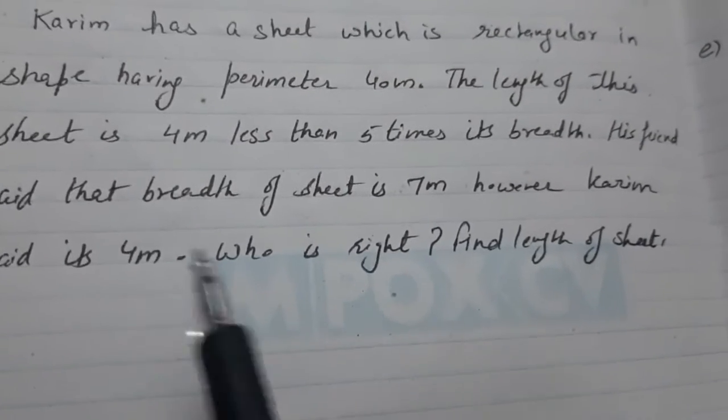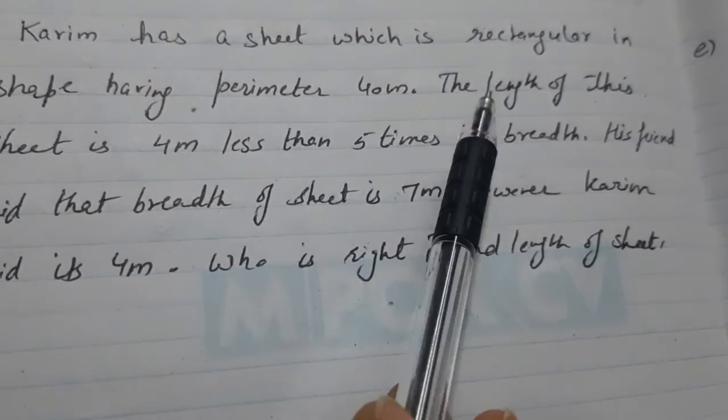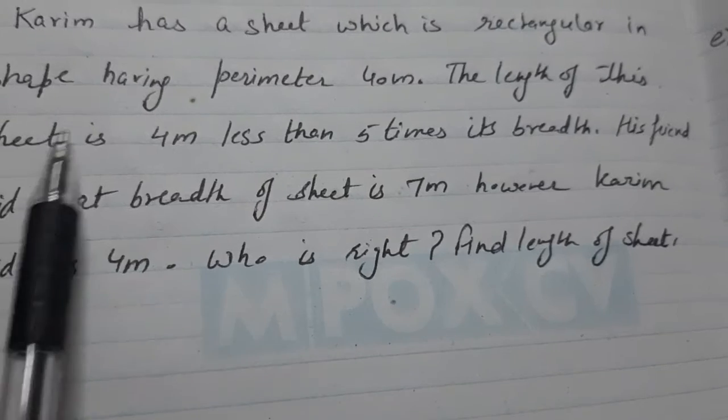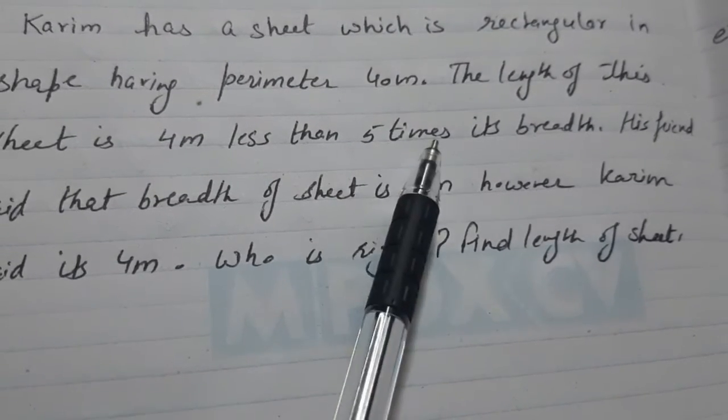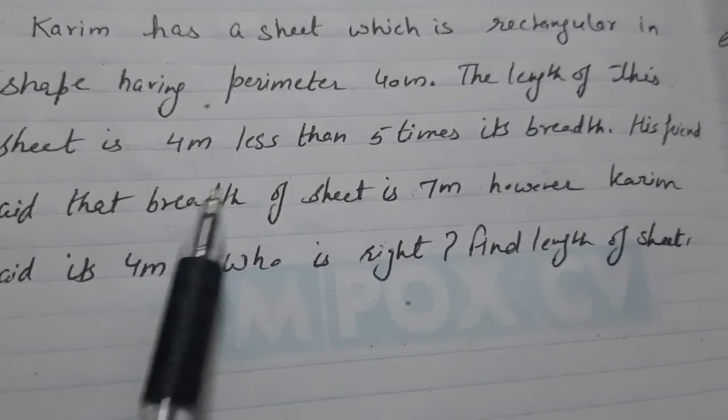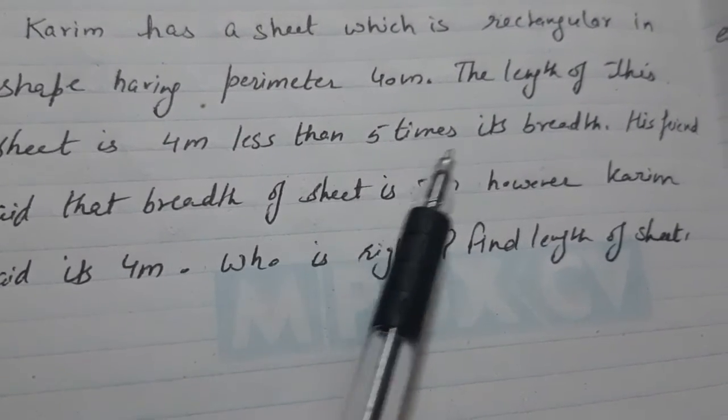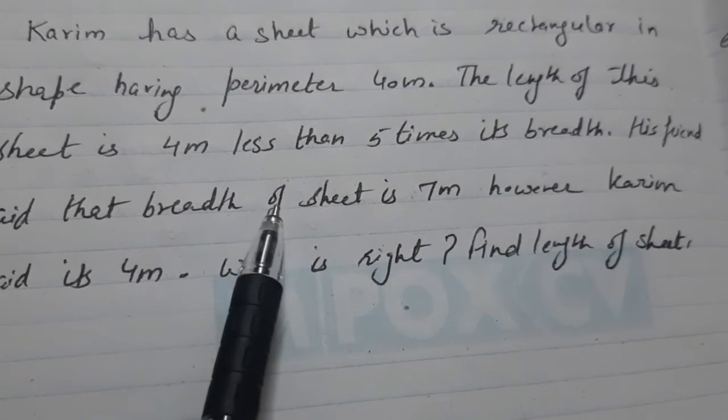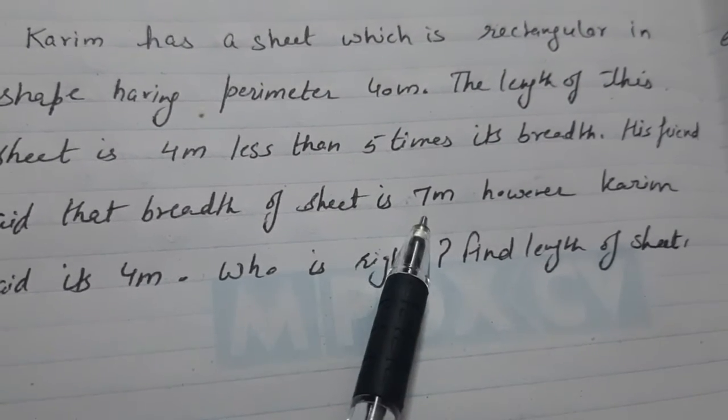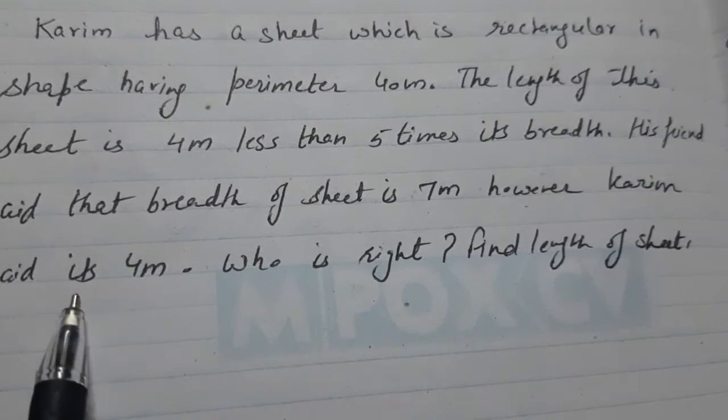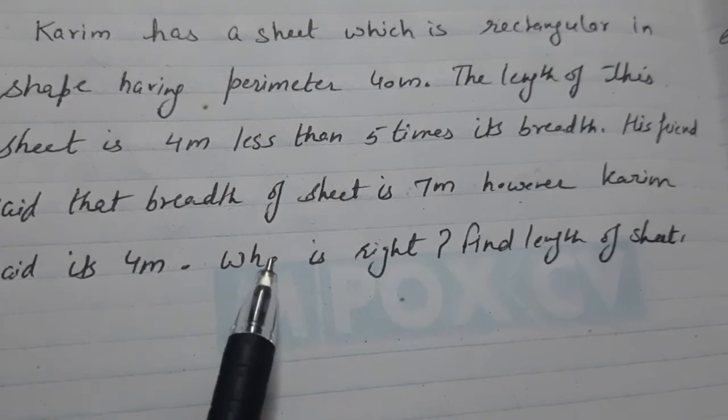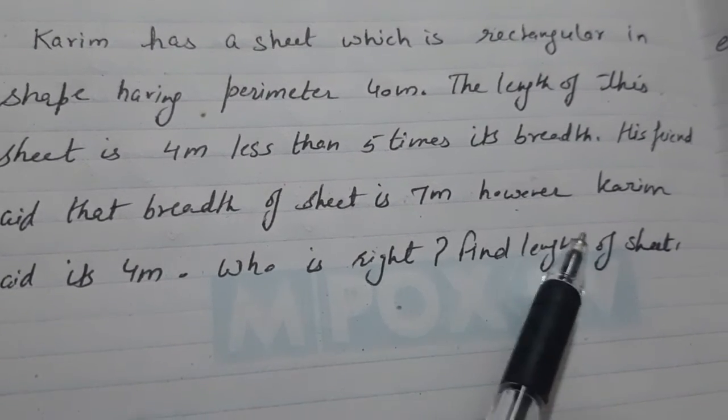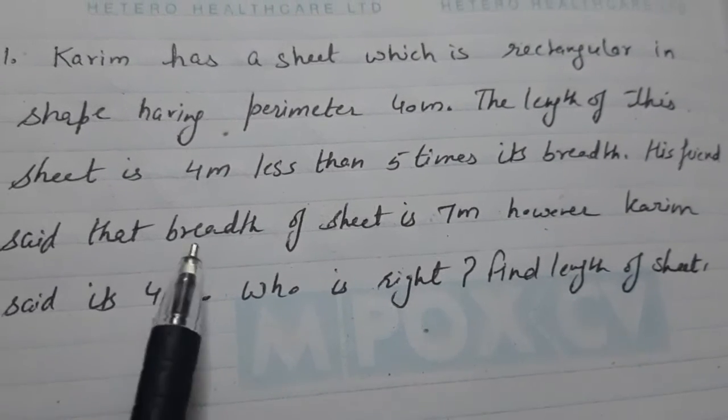Let us solve both problems. Karim has a sheet which is rectangular in shape, having perimeter 40 meters. The length of this sheet is 4 meters less than 5 times its breadth. His friend said that the breadth of sheet is 7 meters. However, Karim said that it's 4 meters. Who is right? Find the length of the sheet also.